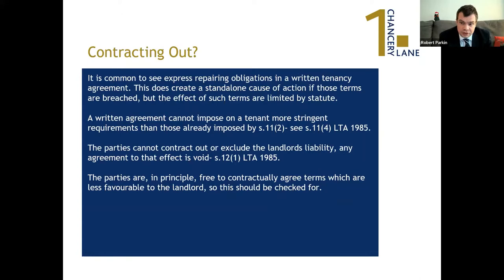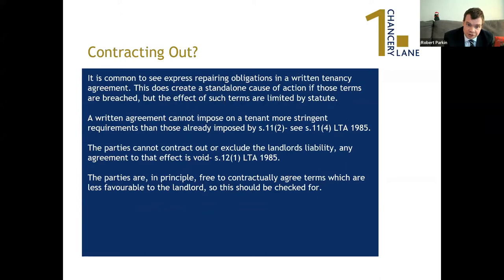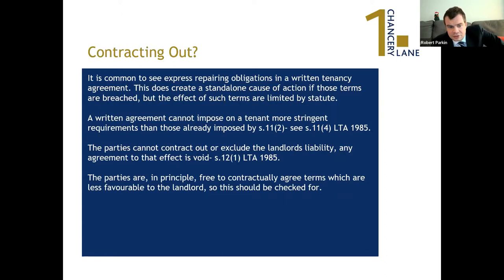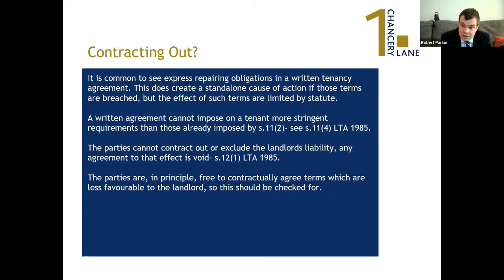On contracting out: you do see express repairing obligations in a written tenancy agreement, and if breached, that creates a separate standalone cause of action. But there are restrictions. A written agreement cannot impose on a tenant more stringent requirements than those already imposed by Section 11.2, and the parties cannot exclude or agree to exclude the landlord's liability — that's Section 12.1, and any agreement to that effect is void. Just about the only thing parties can do is agree contractually to impose more stringent terms on the landlord.